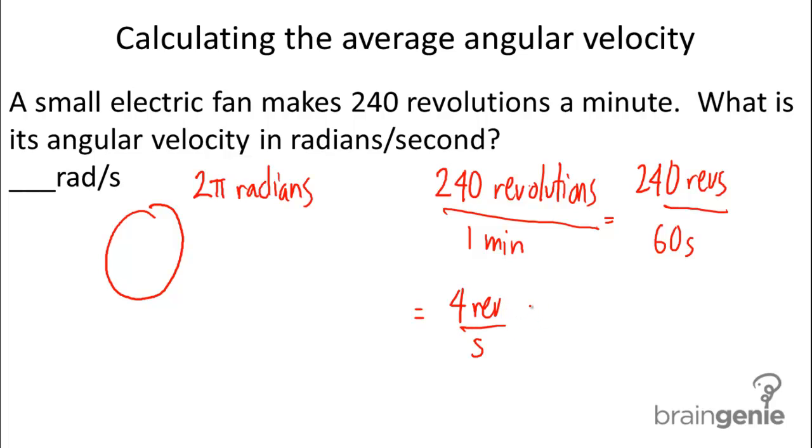Now, 4 revs per second times 2 pi radians gives us a total of 8 pi radians per second. Or, if we were to simplify that, it would be 25 radians per second. So, this being our final answer.